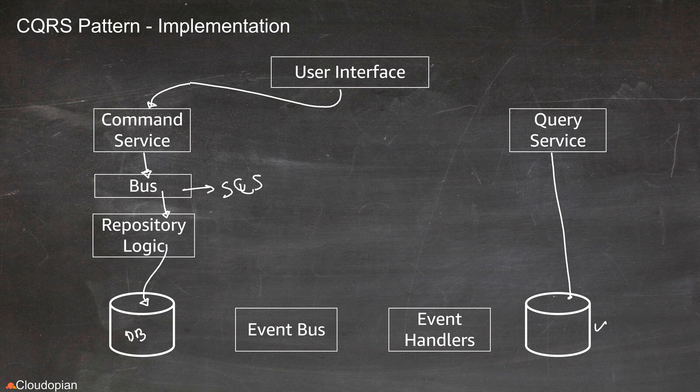And for that, this database that the command service is using may trigger an event, and this event can go into this event bus along with the changes that they have made to the database. So this also can be another queue if you want. And then there's going to be an event handler that's going to pick this change and then modify the database that the query service is using.